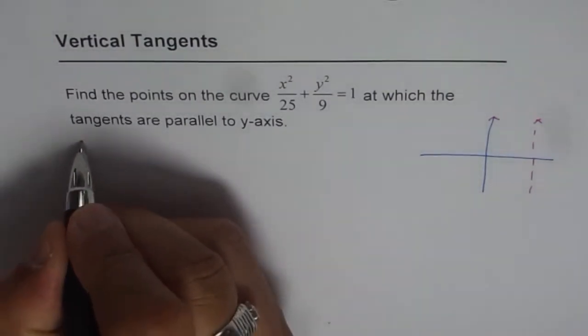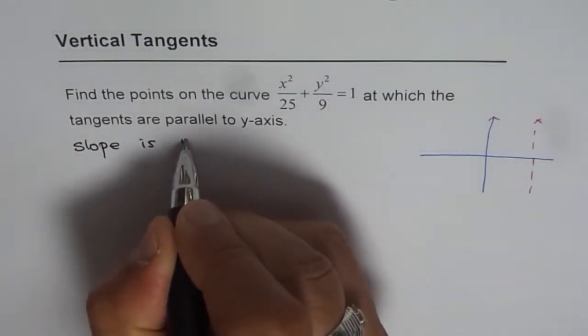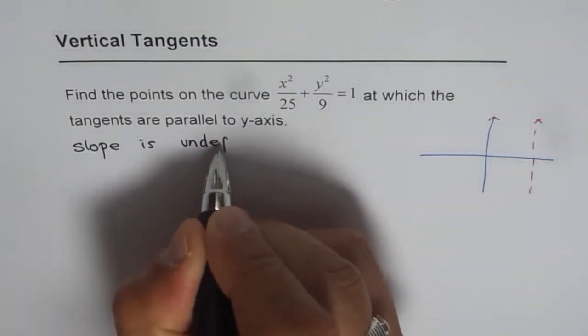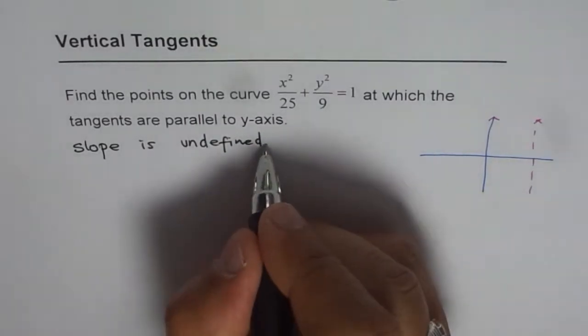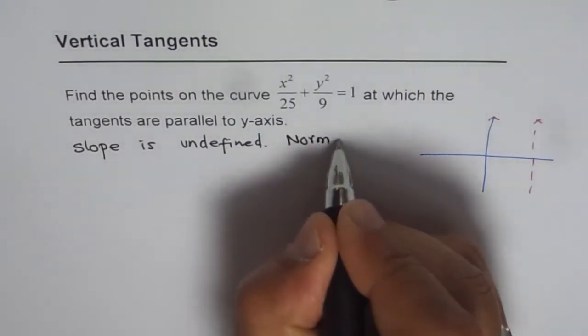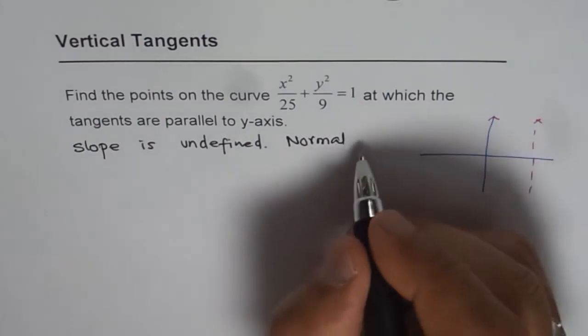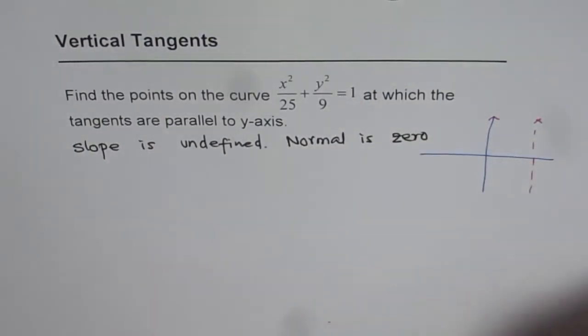So that means we are looking for points where slope is undefined, kind of 1 over 0. Or we say that normal is 0, or we can say normal is 0. Normal or perpendicular is 0. Either way, that is how we have to look into it.